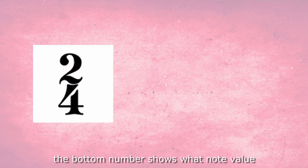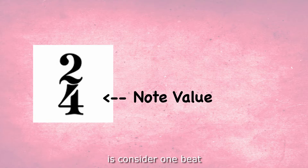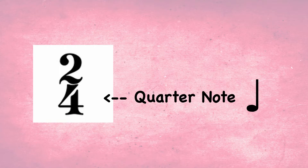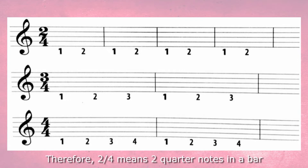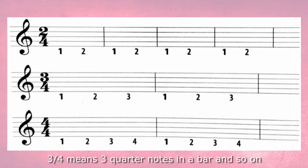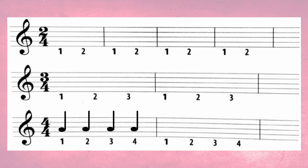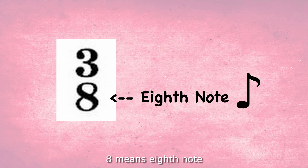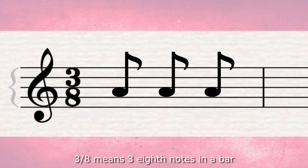The bottom number shows what note value is considered 1 beat. 4 is a very common note value, which means quarter note beats. Therefore, 2/4 means 2 quarter note beats, 3/4 means 3 quarter note beats, and so on. If it's a 2 at the bottom, it means half note — so 2/2 means 2 half notes in a bar. 8 means eighth note — 3/8 means 3 eighth notes in a bar.